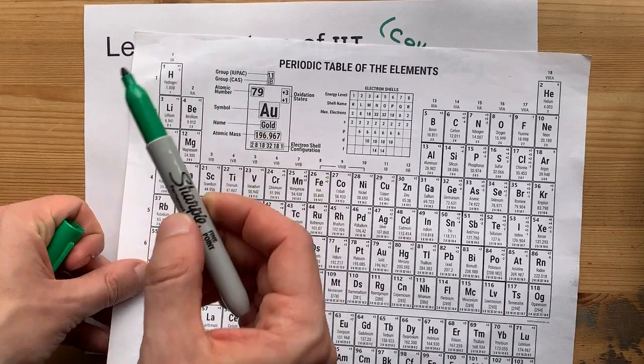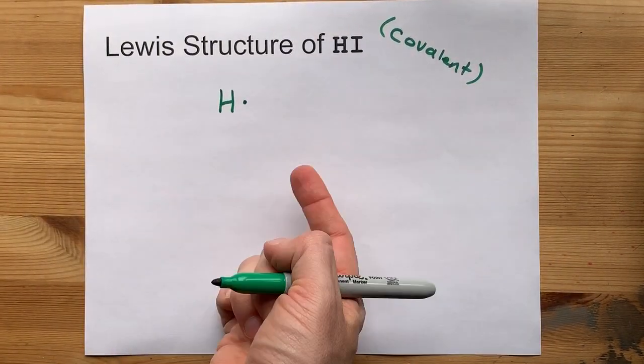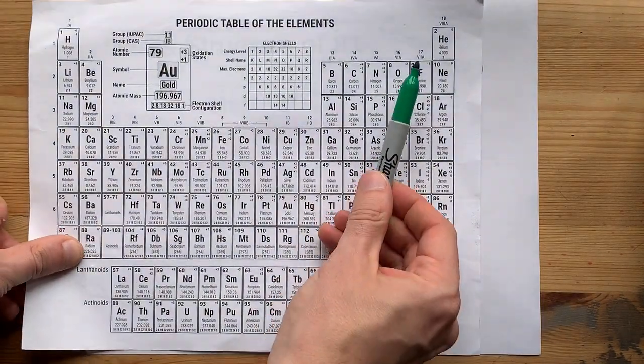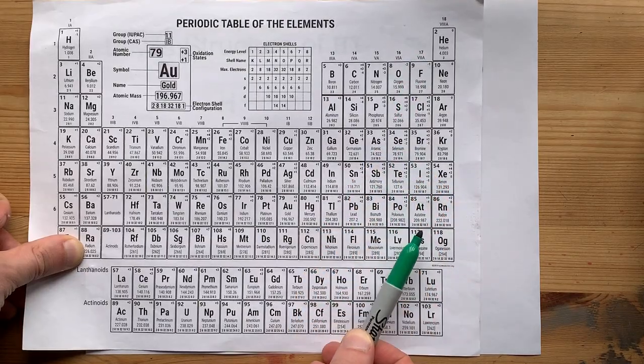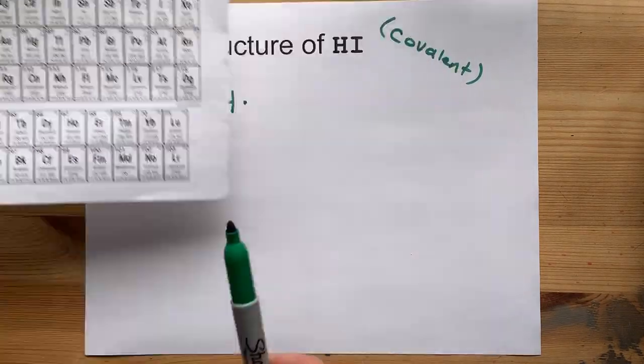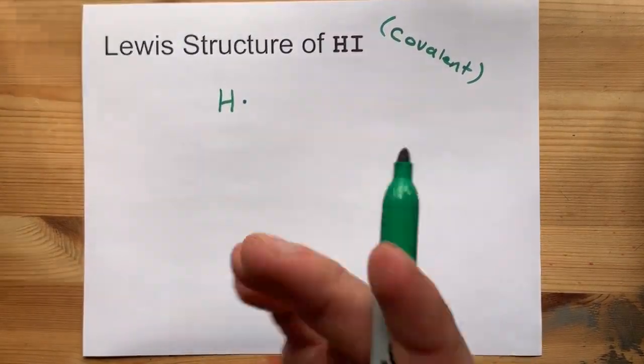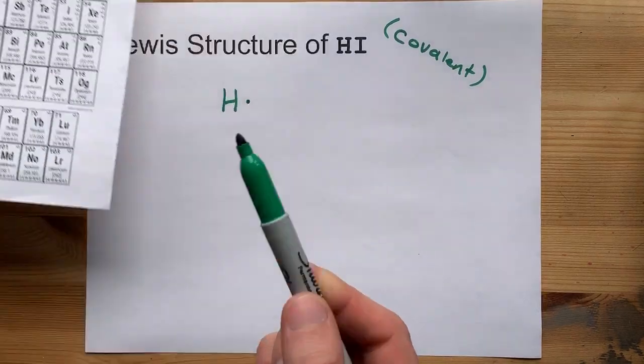Hydrogen is in group one, so brings one valence electron with it. See? One dot. Iodine is in group 17. All of these bring seven valence electrons. It's because they're one away from having a full octet. The way I remember it though is group 17 has seven valence electrons.